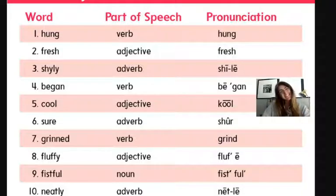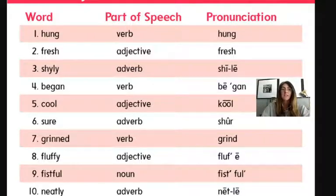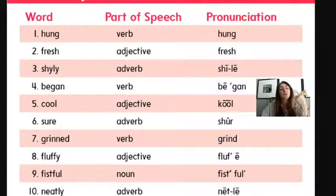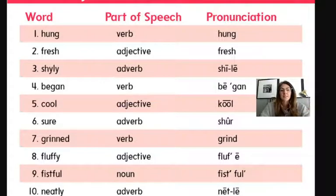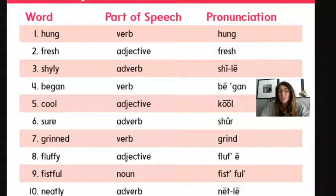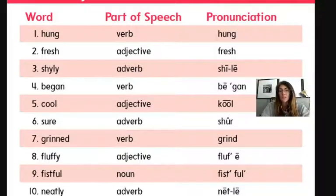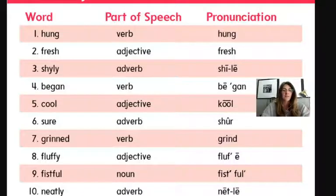Number seven is grinned. Show me a grin — grin is another name for smile. We have an -ED at the end, which means it already happened in the past. That makes it a verb. Look at how it's pronounced: the short I doesn't have that long line at the top. For example: I grinned at the dog down the street.